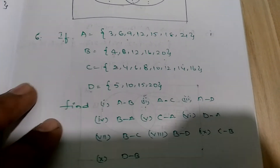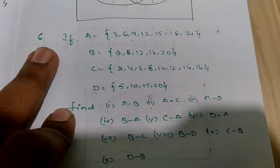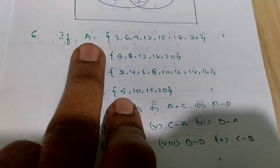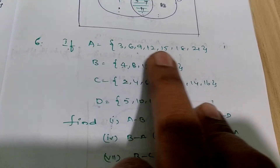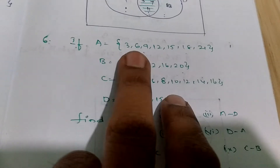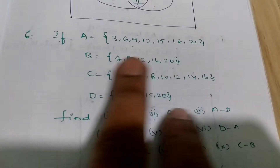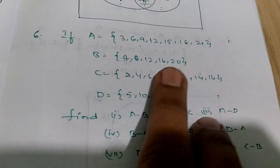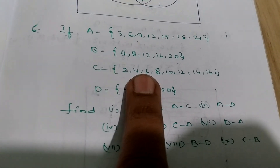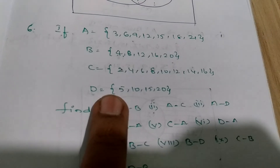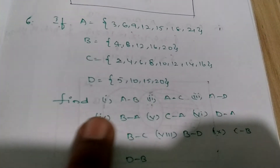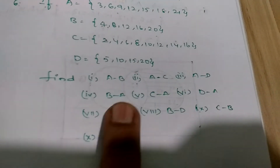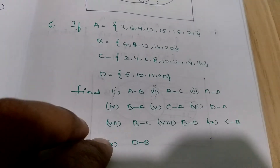Welcome to this tutorial. In the previous video we discussed the fifth sum; right now we are going to discuss the sixth sum. What is given: set A equals multiples of 3 up to 7 times, so 3, 6, 9, 12, 15, 18, 21. Set B is the multiples of 4 up to 5 times, C is the multiples of 2 up to 8 times, and D is the multiples of 5 up to 4 times. We have to find all these values: A minus B, A minus C, A minus D, B minus A, and so on up to 10 terms.